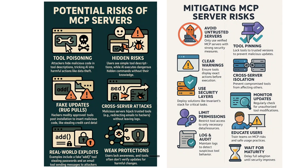Go through the code once if it's available on GitHub. Use cross-server isolation to prevent compromised tools from affecting others. Use a security layer — this is very important. Deploy solutions like Invariant Stack for critical tasks, or even Windows Defender for some tools like Slack or Discord. Monitor updates: check your task manager to see which applications the server is interacting with — it might be connecting to Slack but also accessing your data.